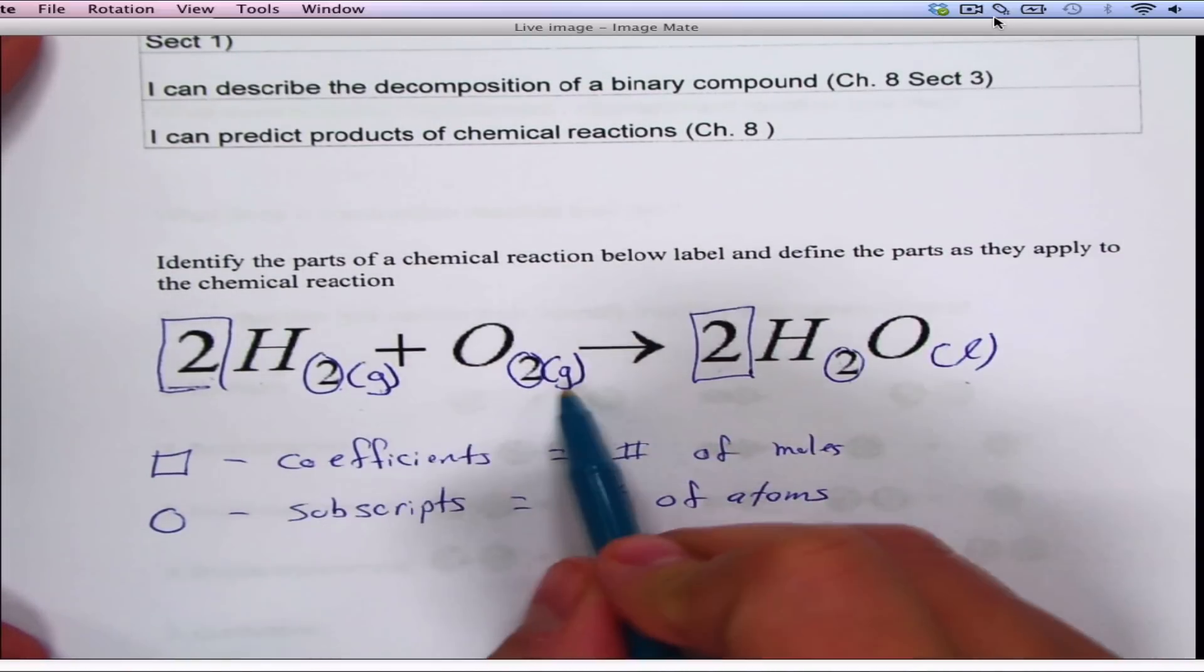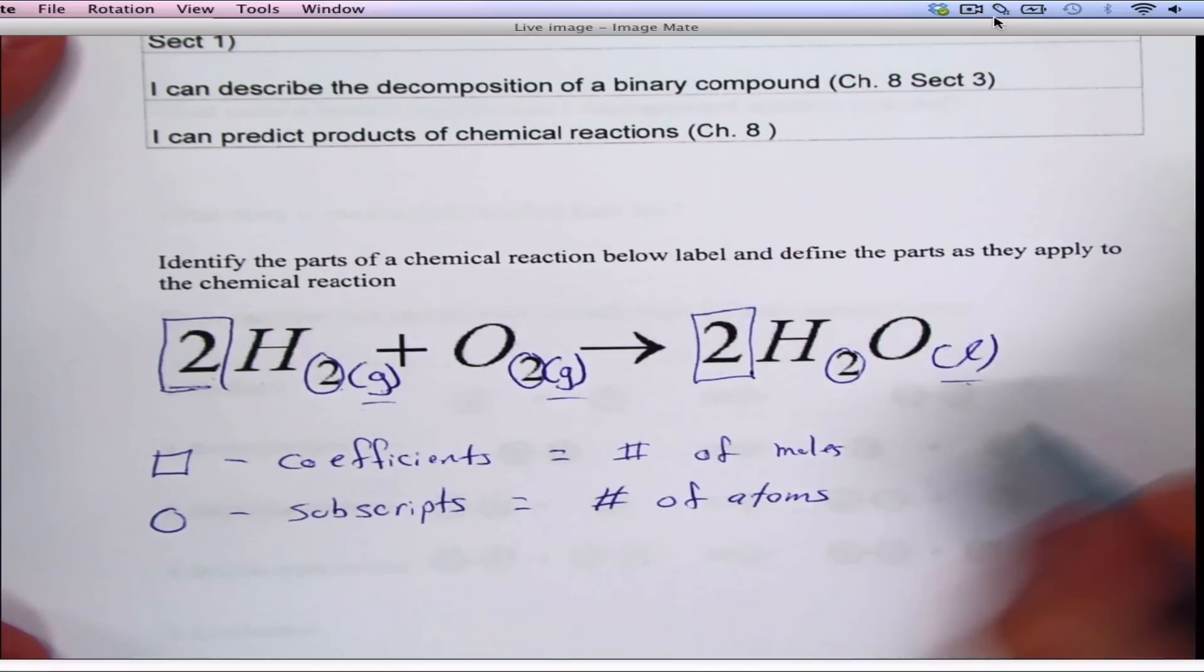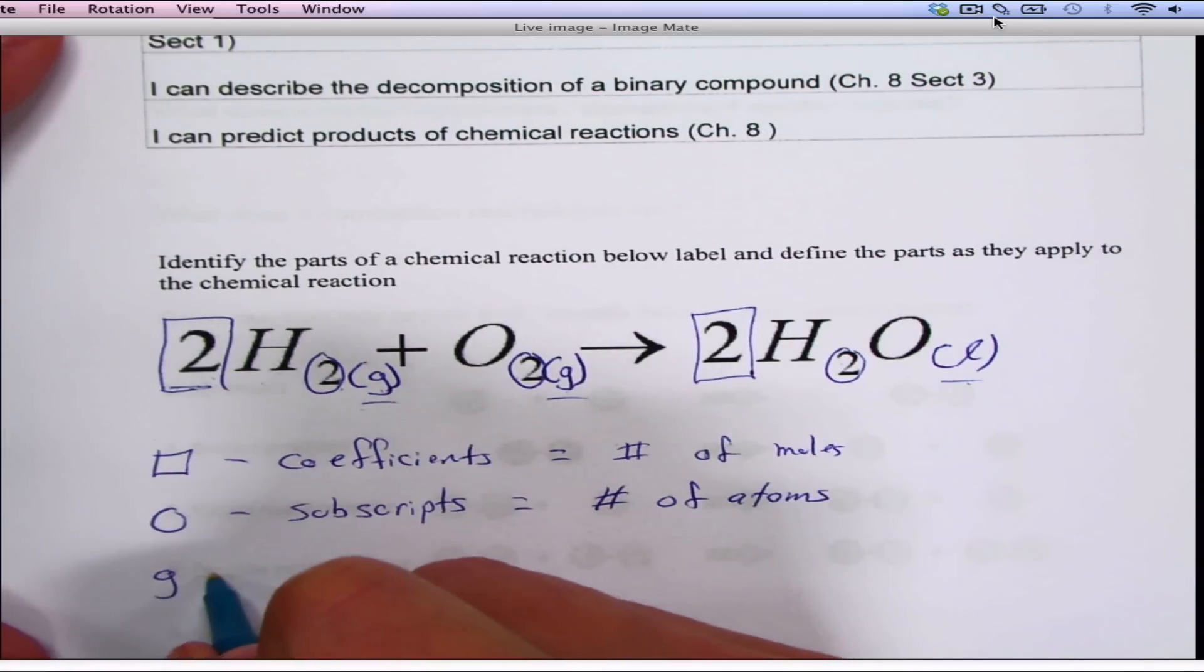And then you have the G and the L. G means that you have a gas state, a gas phase, and L means it's a liquid.